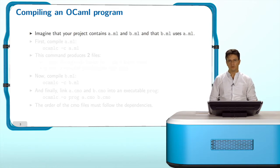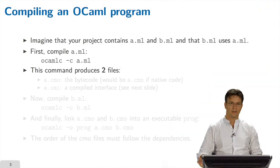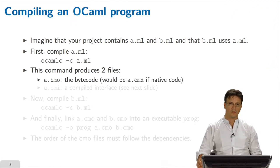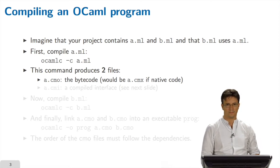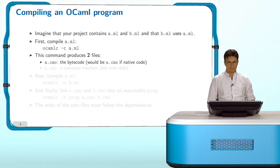Imagine that your project contains a.ml and b.ml, and that b.ml uses a.ml. First, compile a.ml. The command is ocamlc -c a.ml. This command produces two files. The first one is a .cmo file, the bytecode. If you had chosen OCamlOpt, then you will produce a .cmx file, which will contain machine code.